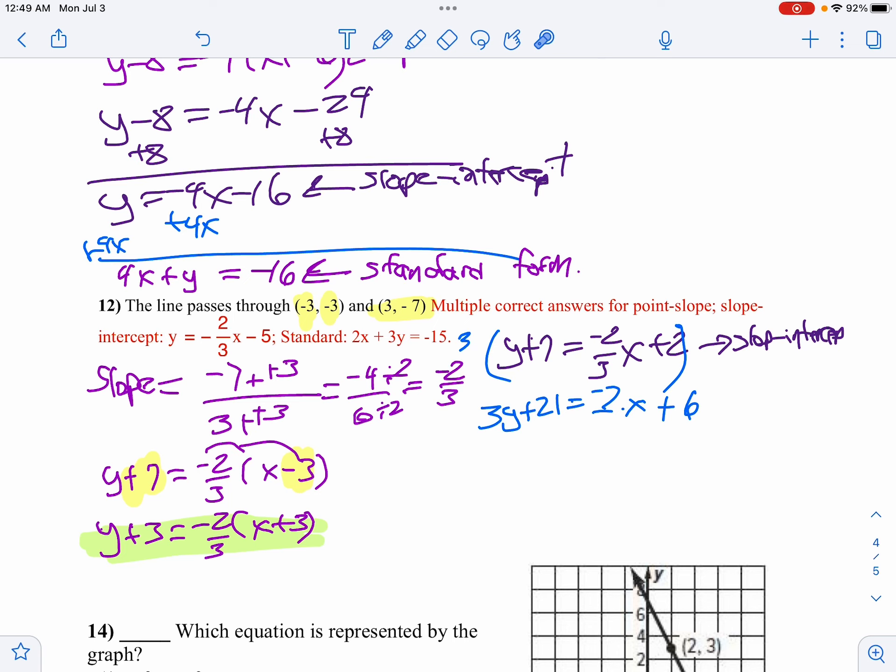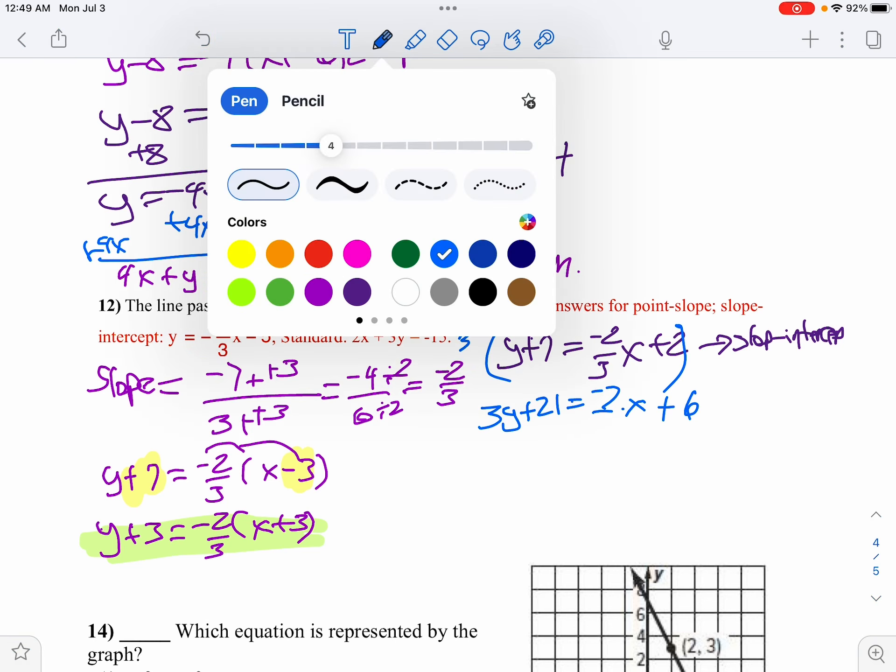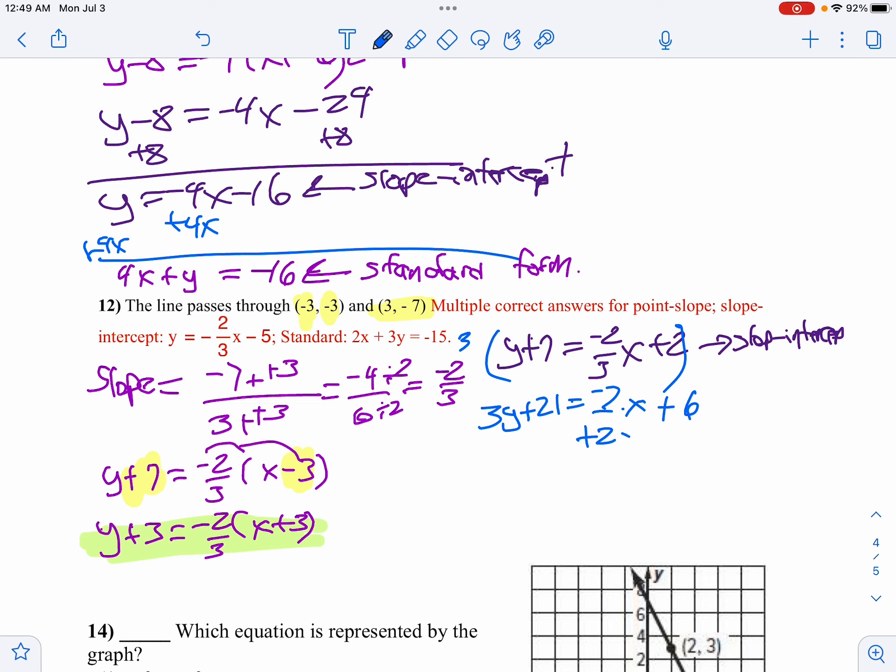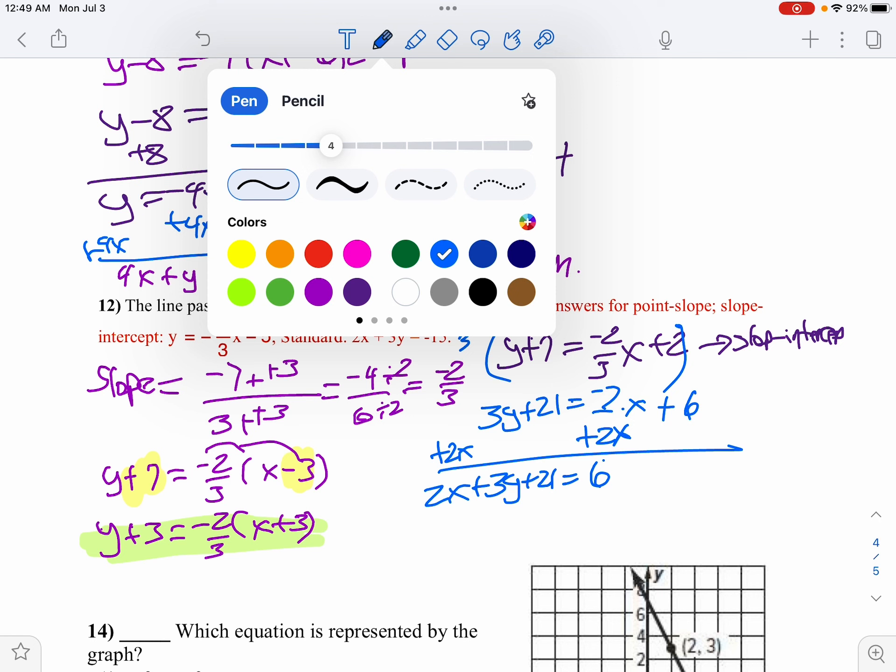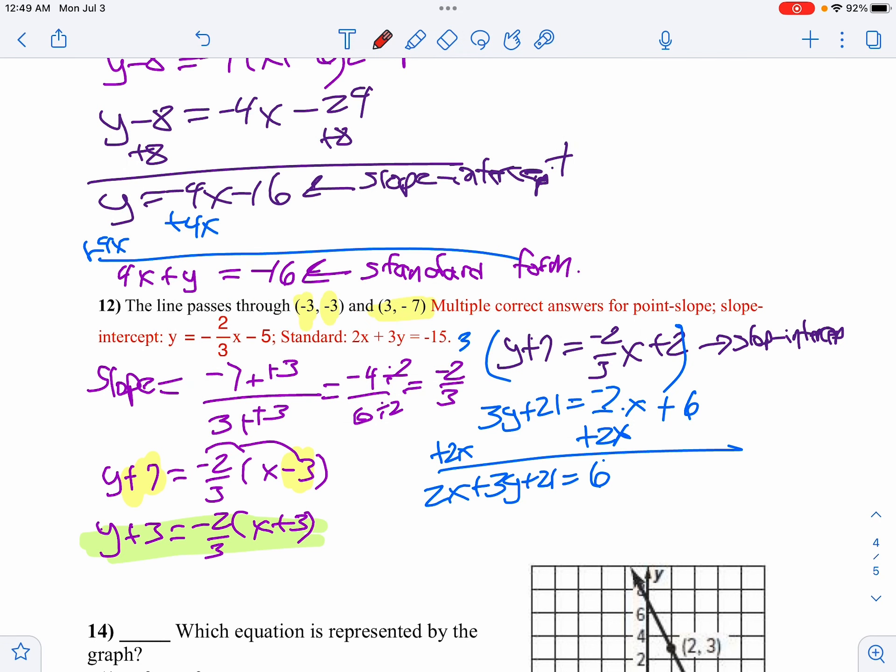Now I'll do like I did before. Let's get all the numbers on one side. I think I'll move my 2x actually first, so I'll add 2x at this point. So then we'll go 2x plus 3y plus 21 equals 6. One more step. I want to get rid of that 21, so I'll subtract 21 from both sides. Bring down the 2x plus 3y equals negative 15. And there is our equation in standard form.